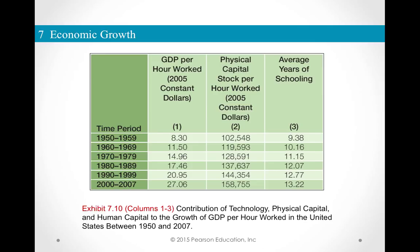Let's look at the physical capital stock per hour worked — how much physical capital is available for every hour worked by all workers in the United States. In 1950 to 1959 it was $102,548 worth of physical capital stock available, and in 2000 to 2007 it is $158,755 in constant 2005 dollars. That has also phenomenally increased.